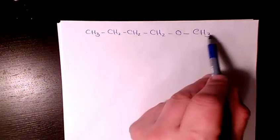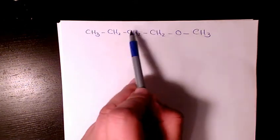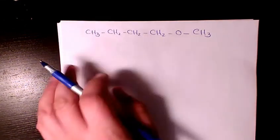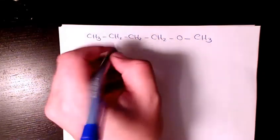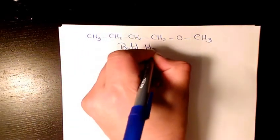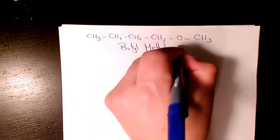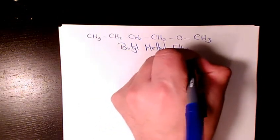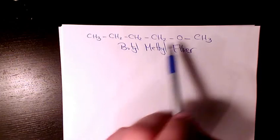We have two alkyl groups: one of them is methyl, the other one is butyl (counting one, two, three, four carbons). So we can write it as butyl methyl ether. This is the common name. What about the IUPAC name?